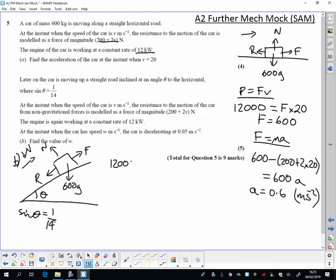So 12,000 is our force times our speed. We have that our resistance is the same as before. So that's going to be 200 plus 2 times our speed. And we're told that acceleration is negative 0.05. So I've got all the information I need.